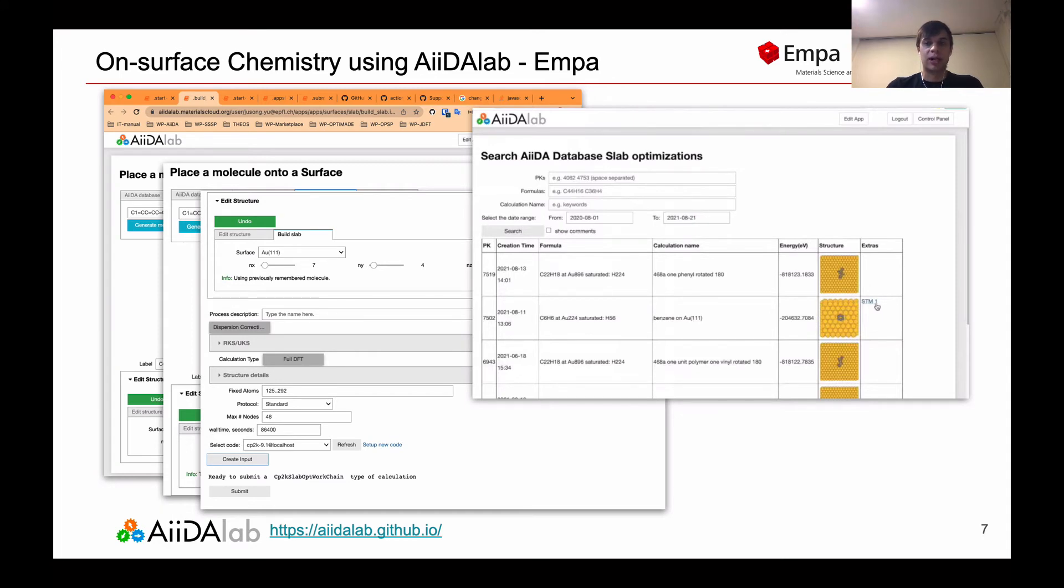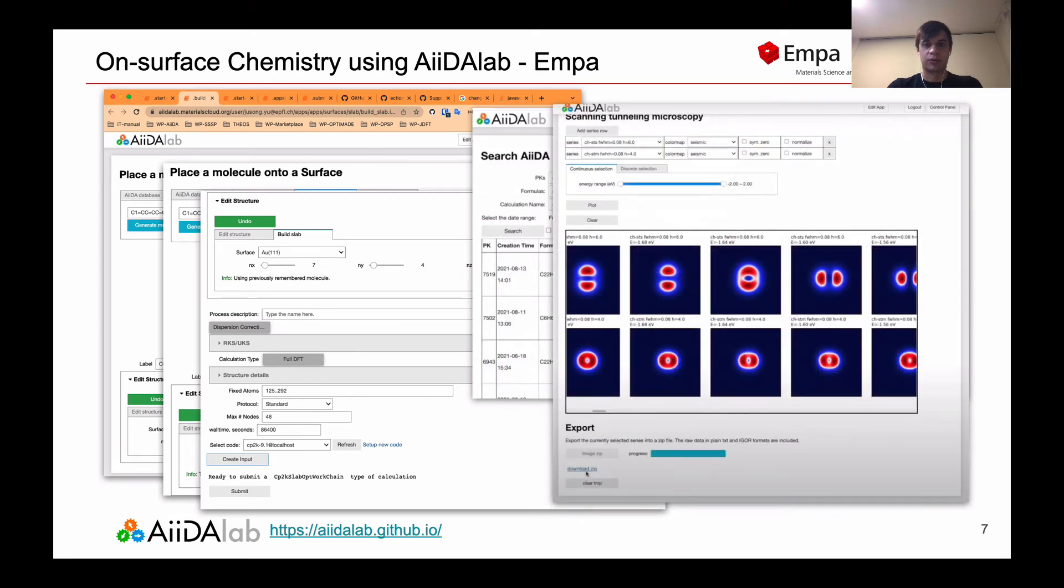In addition to that, a user can submit extra simulations for an optimized structure. Then, those extra simulations will appear in the extra column. For example, for this specific case, we have run an STM simulation for the Benzene molecule on GOLD 111 substrate. And those are the results of such simulations. So you can basically compare the experimental STM images and simulated STM images to understand whether your guess for the molecular structure is correct.